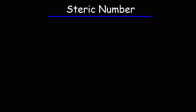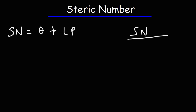In this video we're going to talk about how to calculate the steric number. The steric number is the sum of the number of sigma bonds that an atom has plus the number of lone pairs. The steric number helps us to determine the hybridization of an atom.